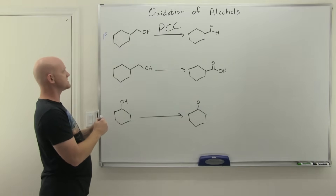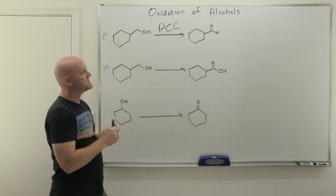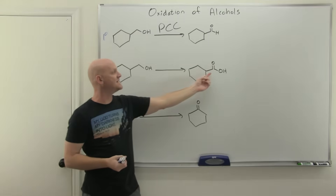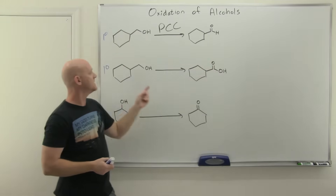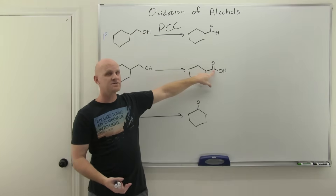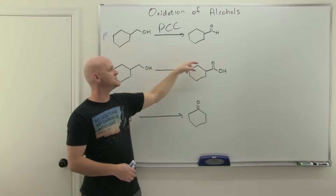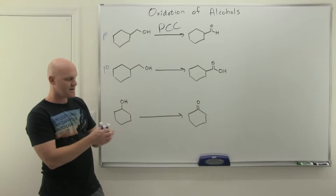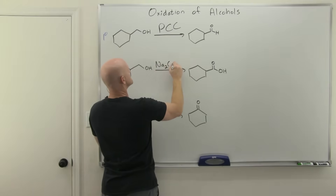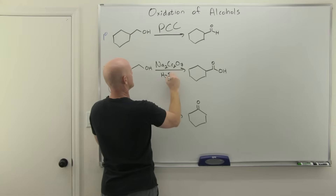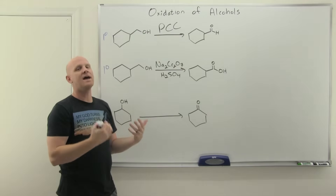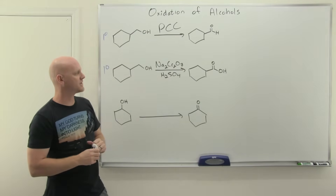In the next example, you're starting with the same primary alcohol but ending up with a carboxylic acid — two full steps of oxidation. The carbon started bonded to two hydrogens and one oxygen; now it has three bonds to oxygen and no hydrogens. It went through two steps of oxidation and is fully oxidized. For a primary alcohol, that's what chromic acid does. You could write this as sodium or potassium dichromate with aqueous sulfuric acid, H₂CrO₄, or CrO₃ with H₂SO₄.